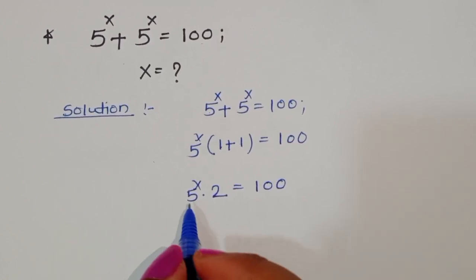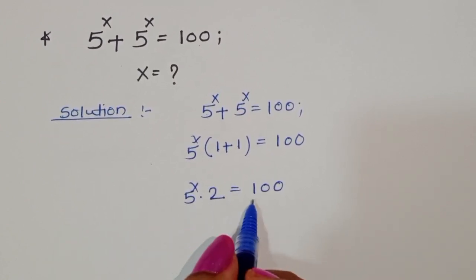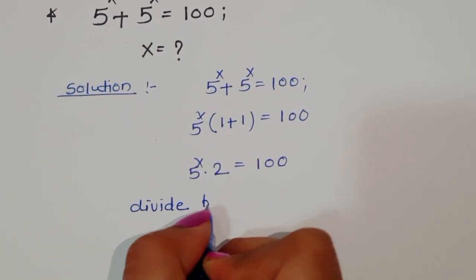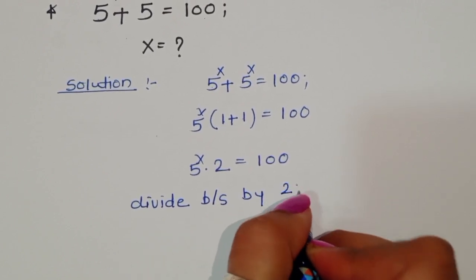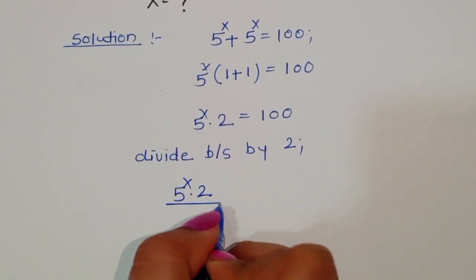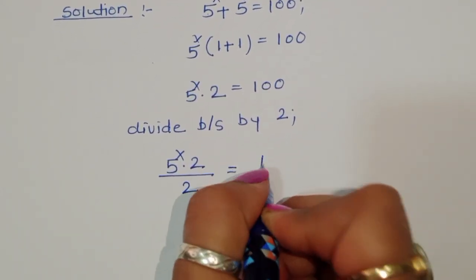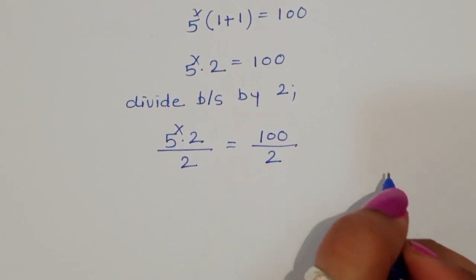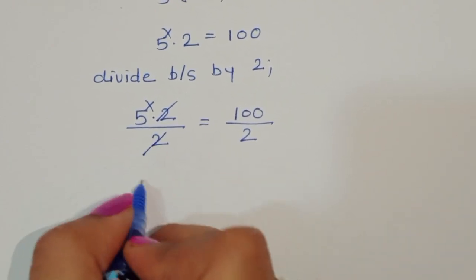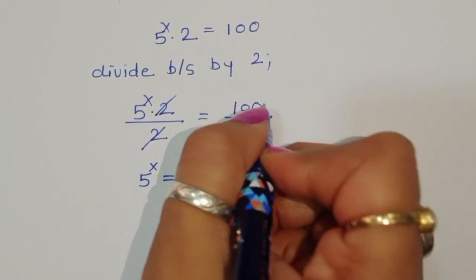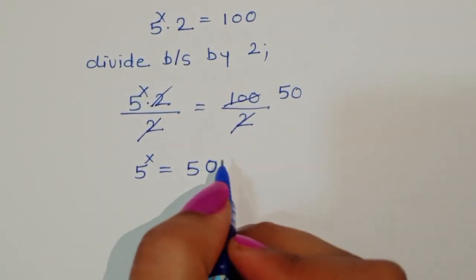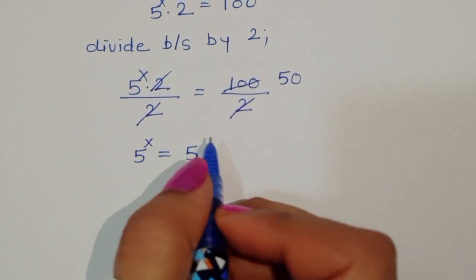We need to cancel the 2, so we divide both sides by 2. Then 5^x times 2 divided by 2 is equal to 100 divided by 2. The 2 cancels, so 5^x is equal to 50.